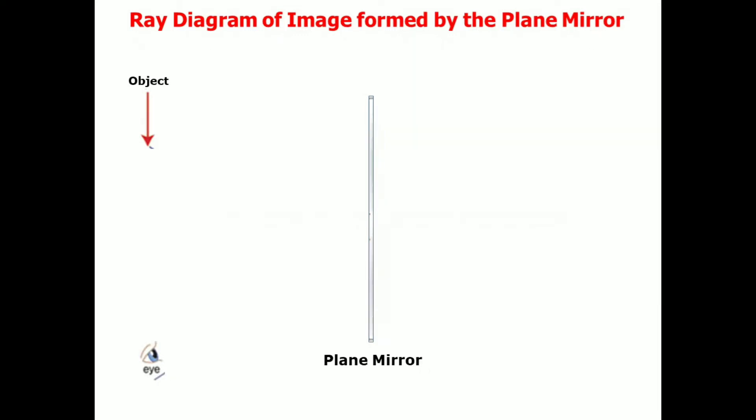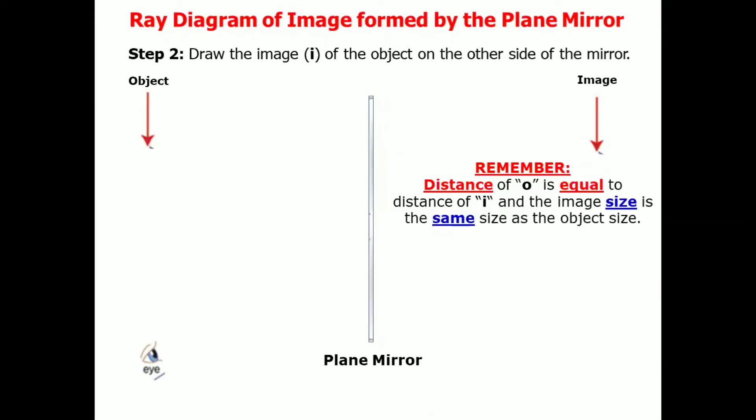Let's proceed to the second one. Draw the image of the object on the other side of the mirror. As we draw the image, you have to remember these things. First, the distance of object is equal to the distance of image. Second, the image size is the same size as the object size.